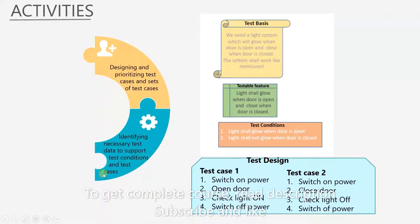The second activity is identifying necessary test data to support test conditions and test cases. We have to find necessary data to fulfill these test conditions. Here, the necessary data is only whether light is on or off. If the door is open, the light is on. And if the door is closed, then light is off. This is the data required here. But in other test cases, this data might be different. We have to identify what that might be.